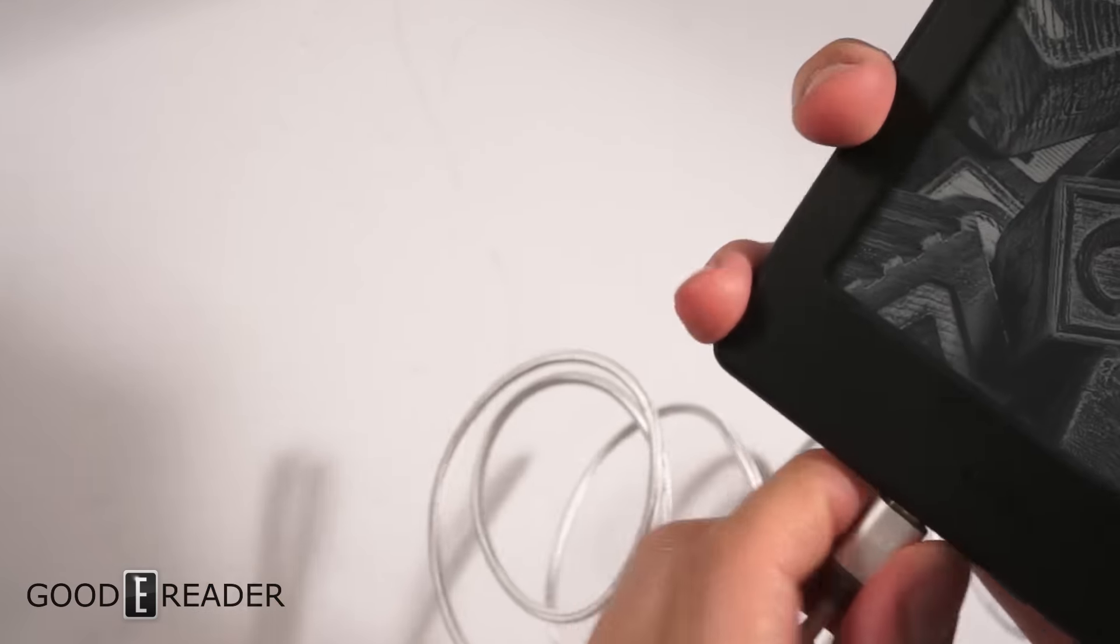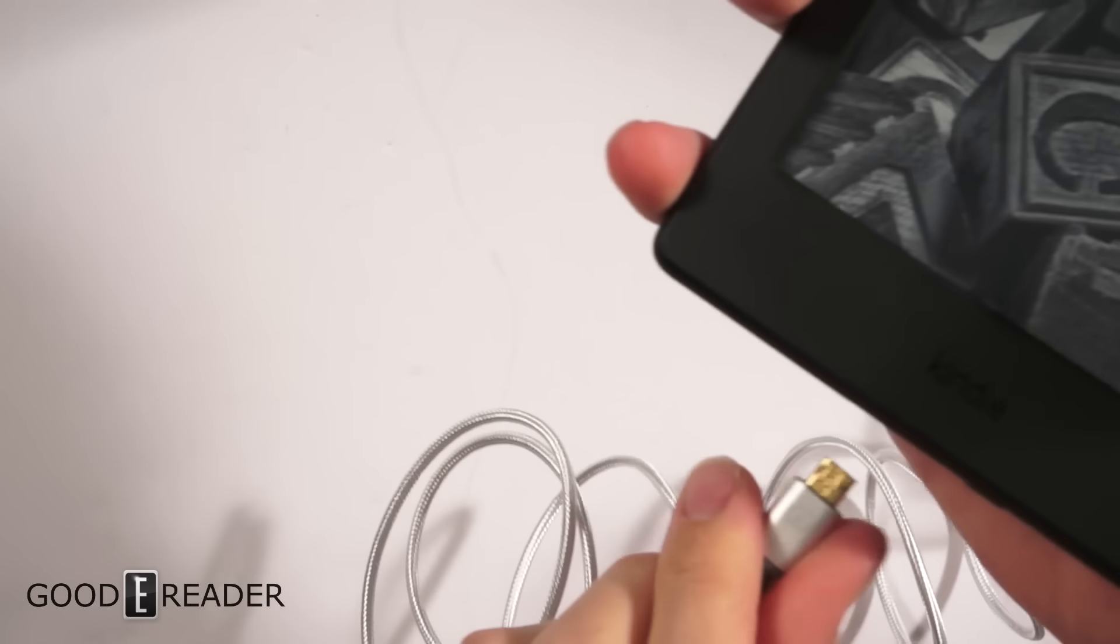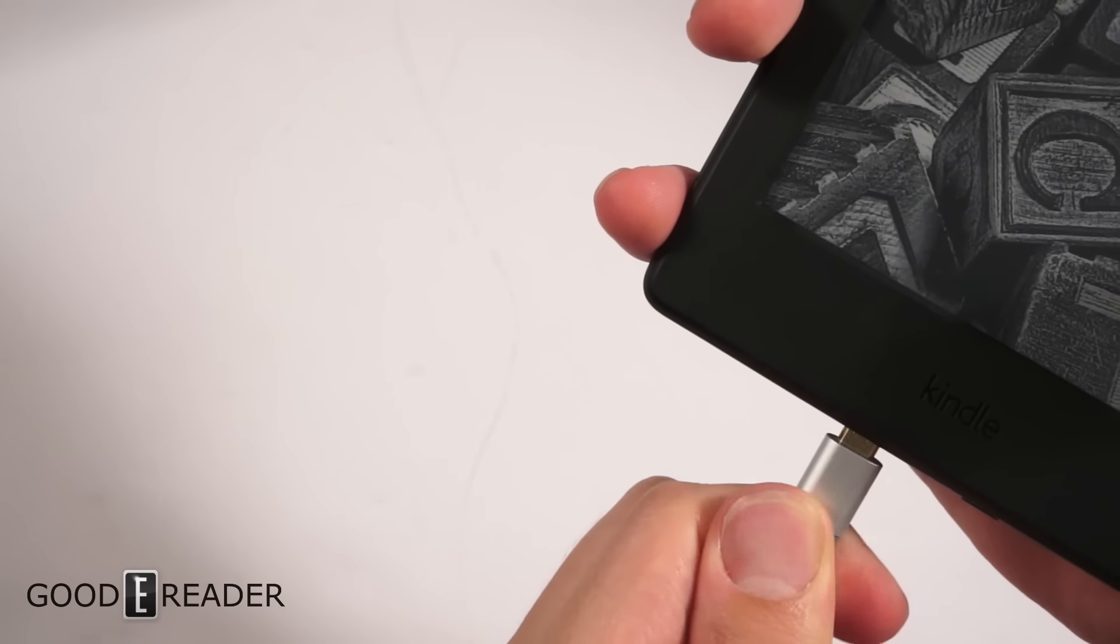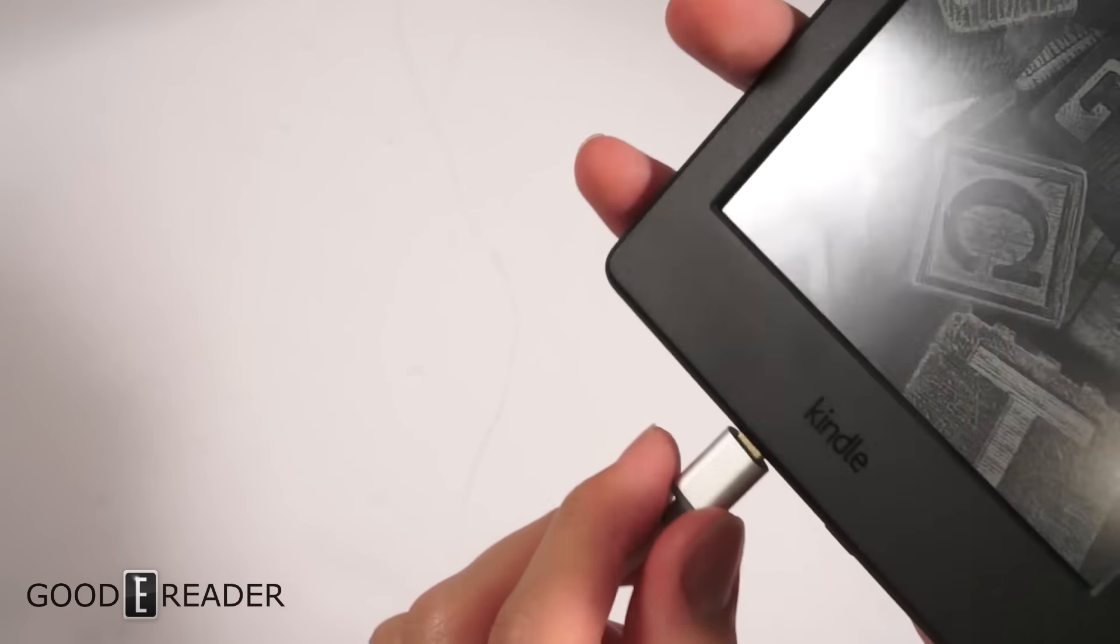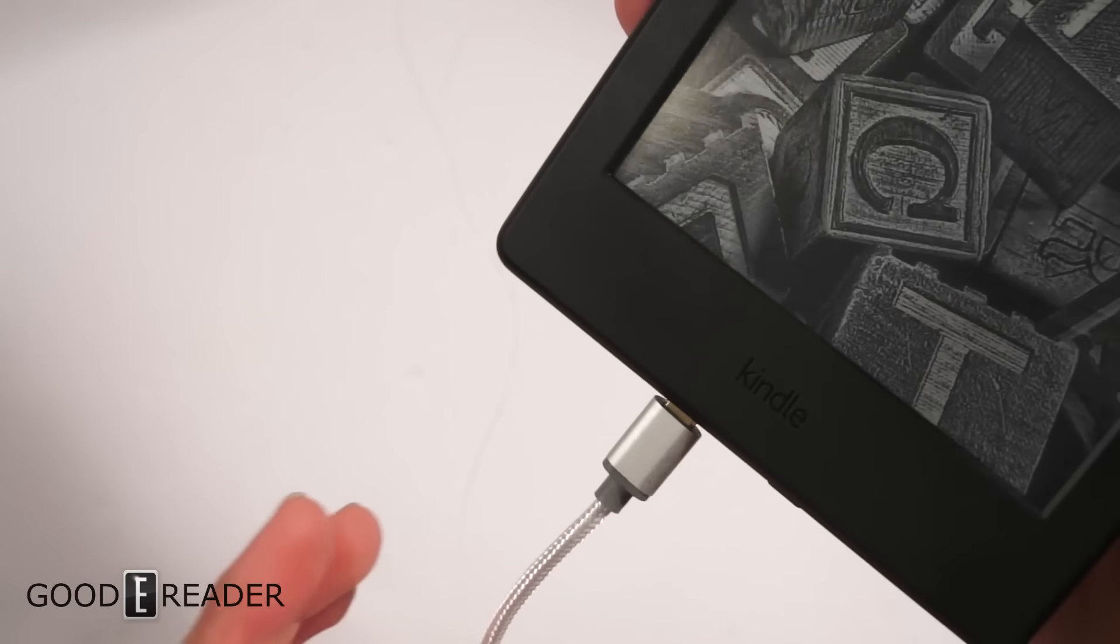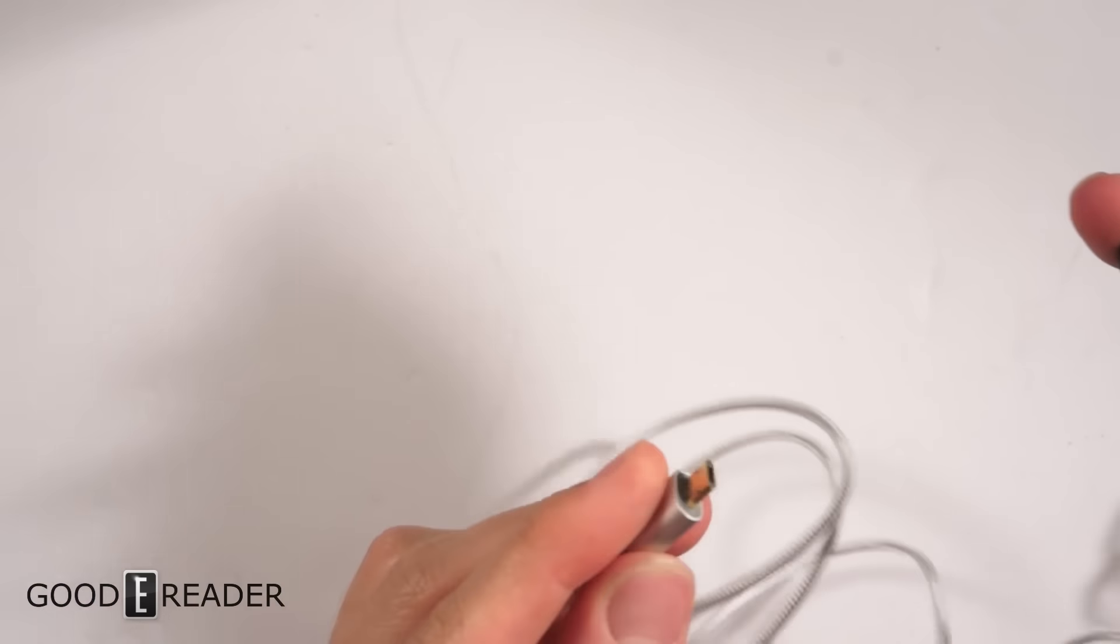So plug that in that way with the W side up, unplug it, and then we'll plug it in the other way with no W, and it still plugs in. So you can actually charge your device and plug it in either side.